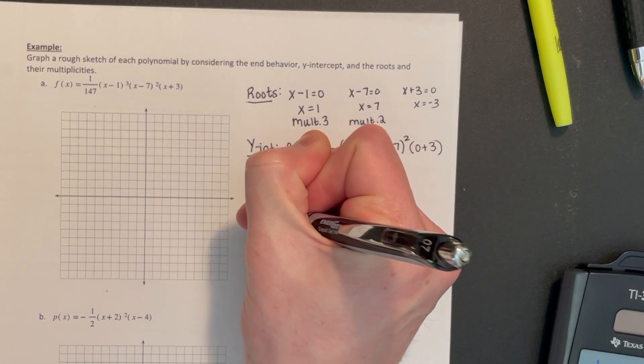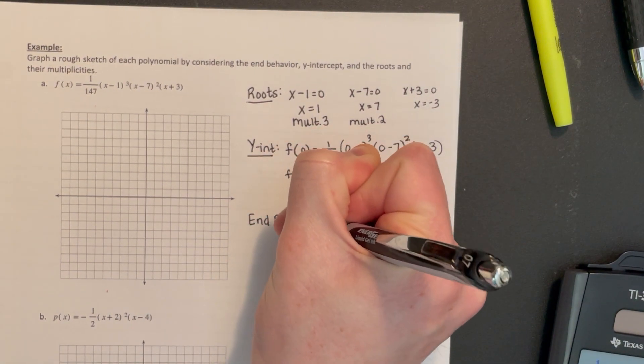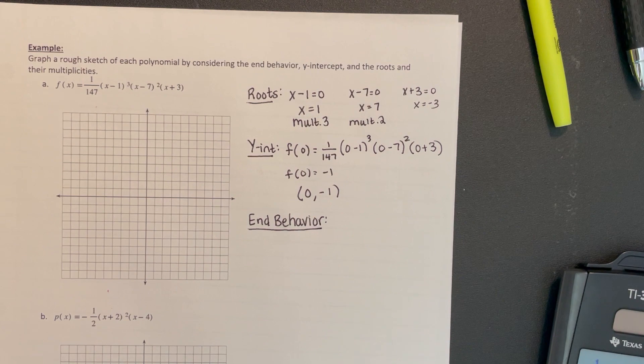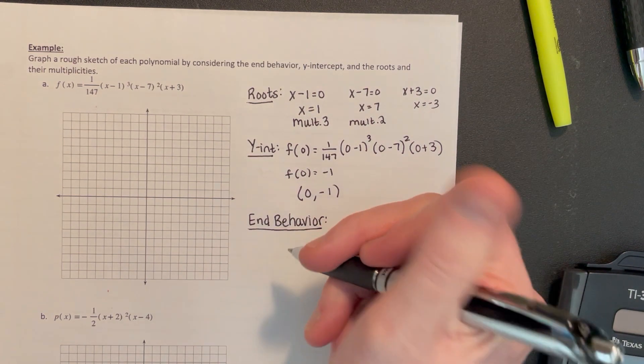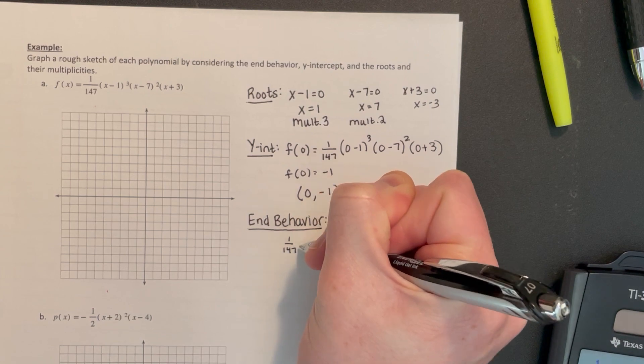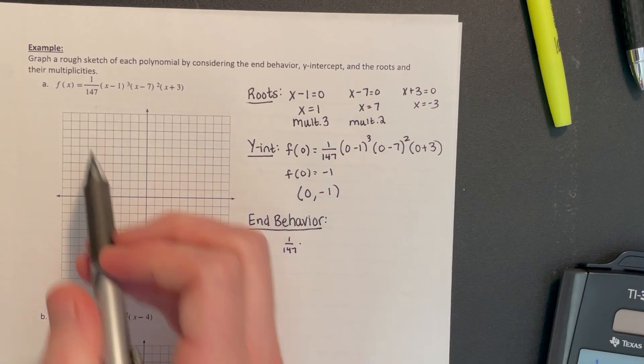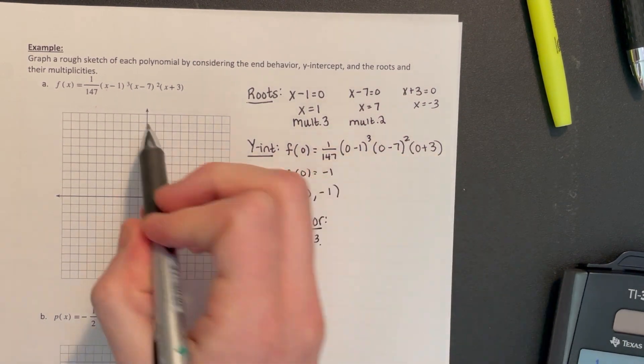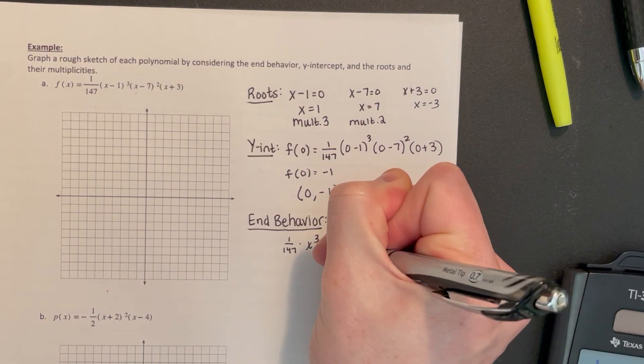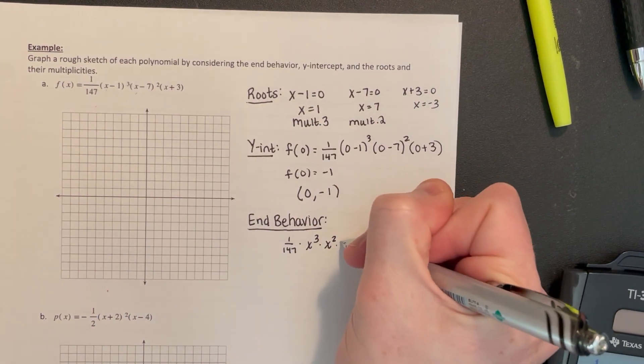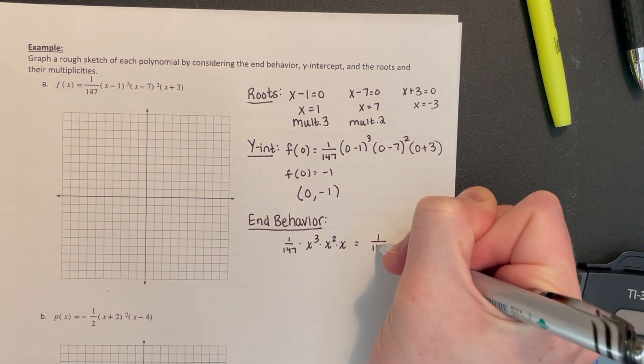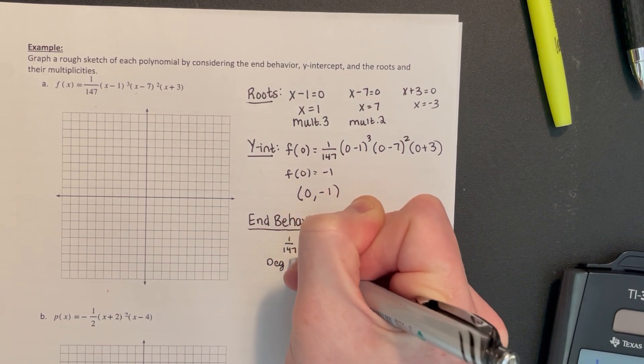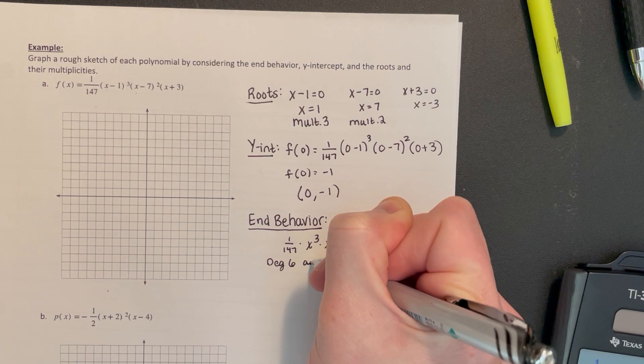The end behavior is made up of that leading term. This is not in standard form, so we'll have to multiply it out in our heads a little bit. One way to do that is to multiply the leading parts of those factors. We have 1/147 times x³ times x² times x, which would be 1/147 x⁶. We have a degree 6 and a positive coefficient.